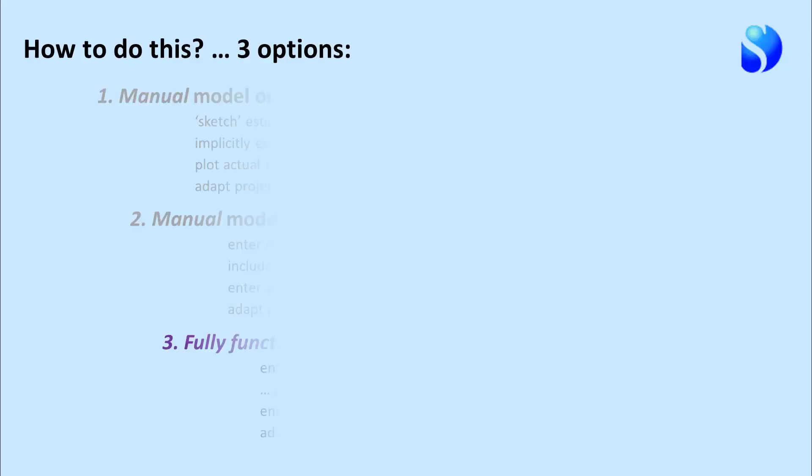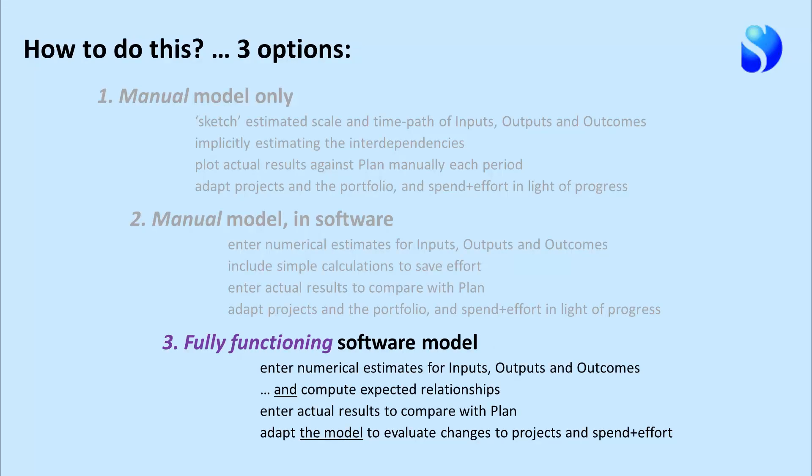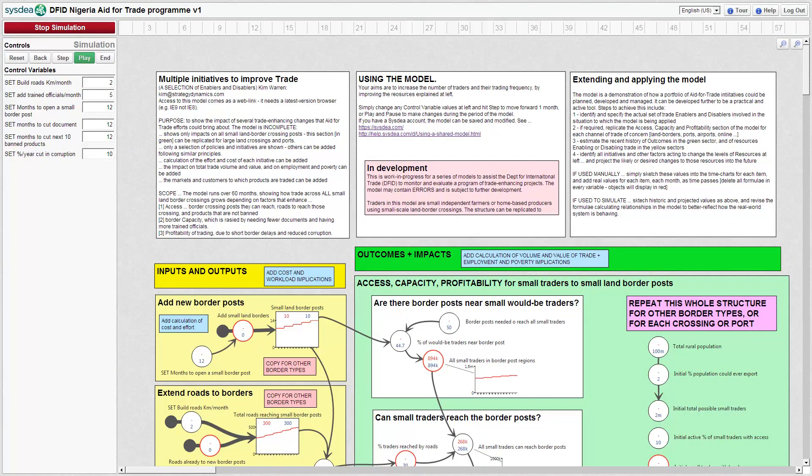Finally, we can take that same software model and actually turn it into a fully functioning software model. Enter numerical estimates for the inputs, outputs and outcomes and compute the expected relationships between them. Then you can compare actual results with plan, adapt the model as well as the policy itself, and evaluate changes to projects and the spending effort that people deploy.